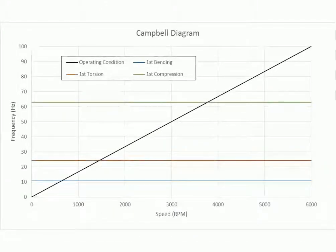Campbell diagrams can be produced to obtain the speeds of operation that could cause the structure to resonate. The intersection of the modal lines and the operating condition line indicates such a speed.